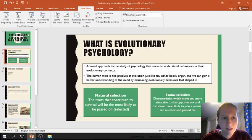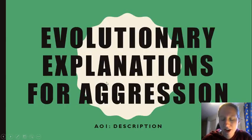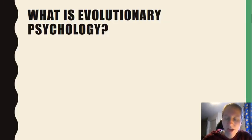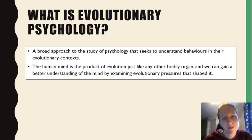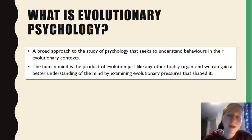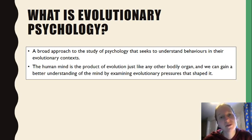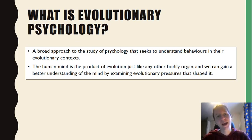This is evolutionary explanations for aggression, AQA psychology. Evolutionary psychology is the branch of psychology that looks at behaviour and the mind in its evolutionary context — what evolutionary pressures have shaped the mind and what characteristics and behaviours have been selected because they help survival and have been passed down.